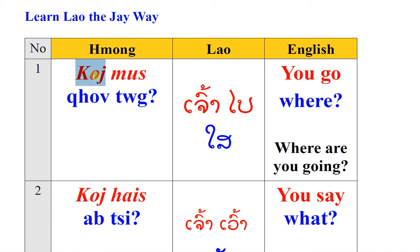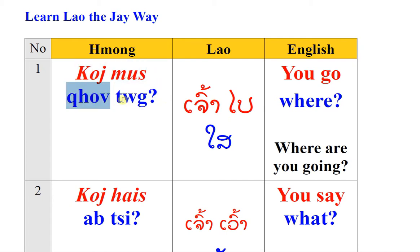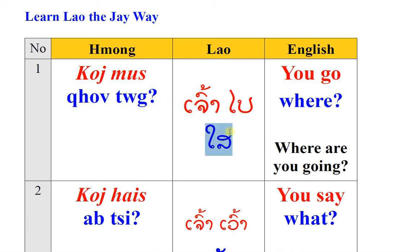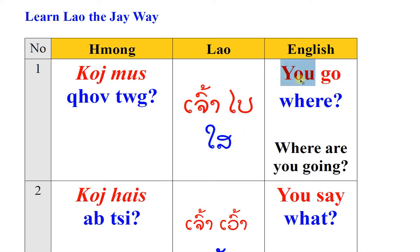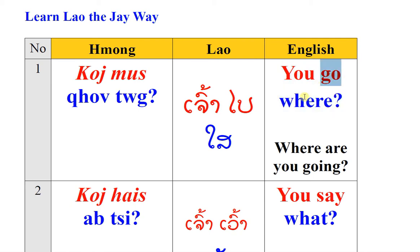Sentence: Co, mu, khó tử. Co, mu, khó tử. Chau, bài, xài. Chau, bài, xài. You, go, where. You, go, where.